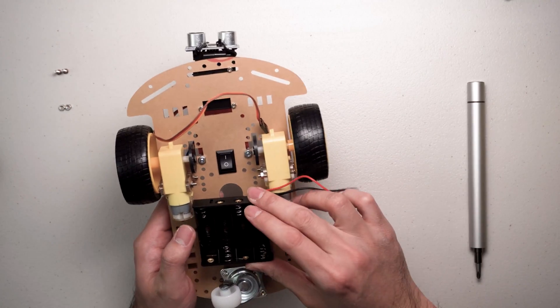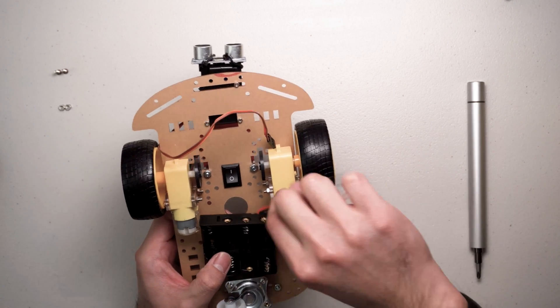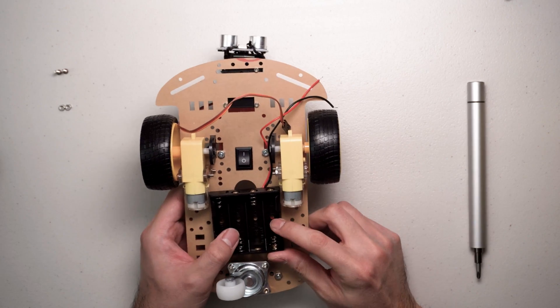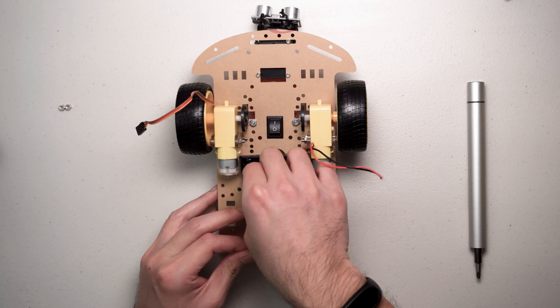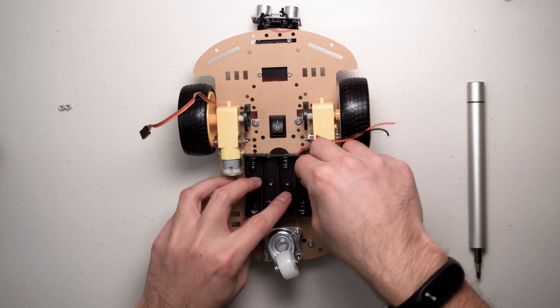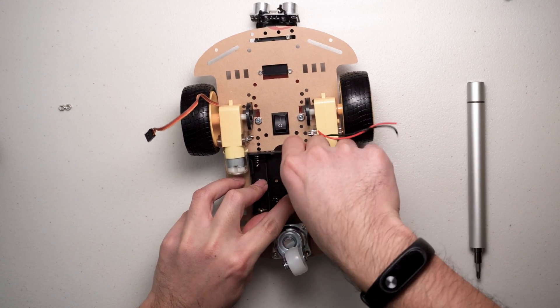The battery holder should be mounted on the bottom of the car. There are two holes designed for that purpose as well. Make sure the wires are facing to the front and use the countersunk screws to mount it.